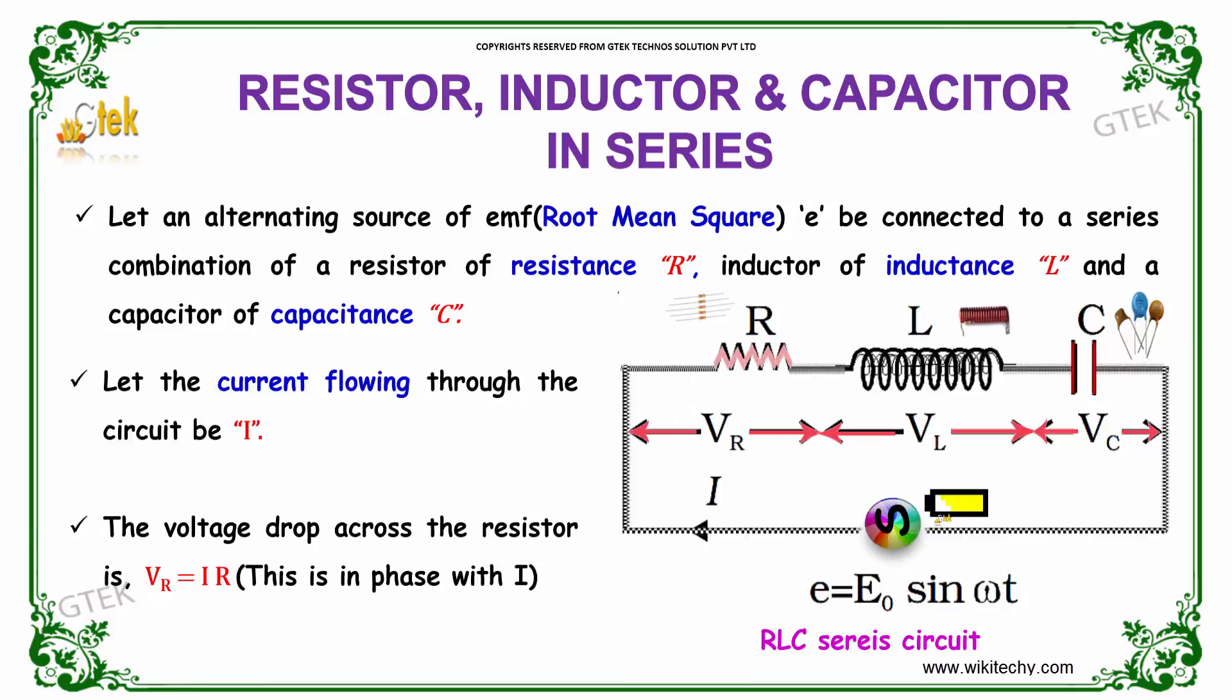An alternative EMF E be connected to a series with a combination of resistor, inductor of inductance L, and capacitor of capacitance C and resistance R. Let I be the current that flows through the circuit.